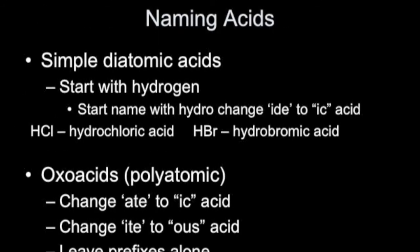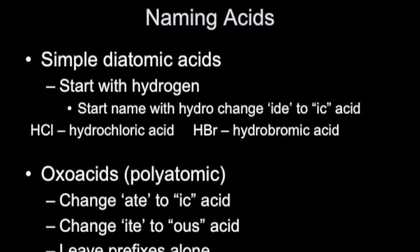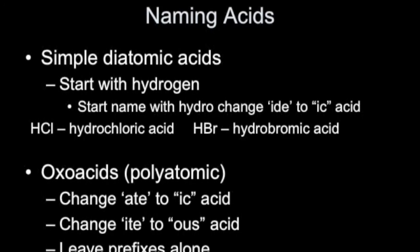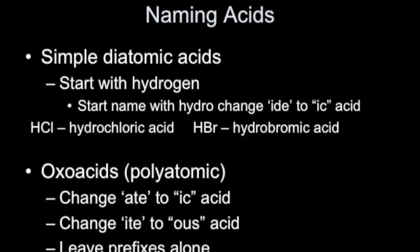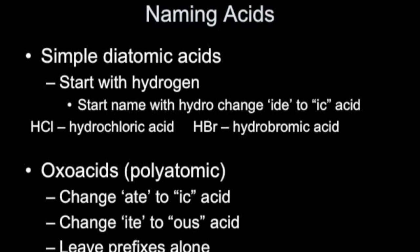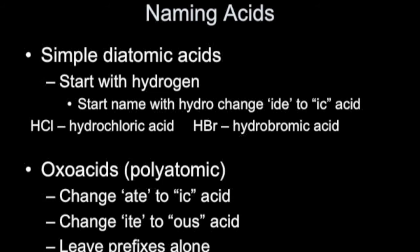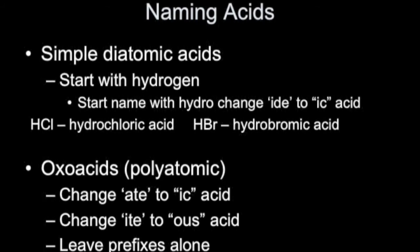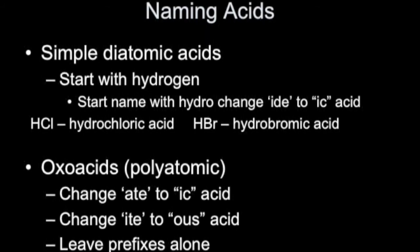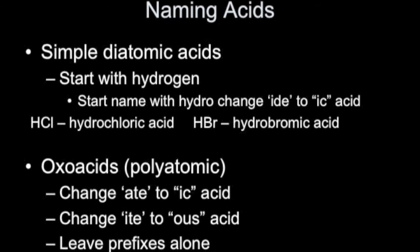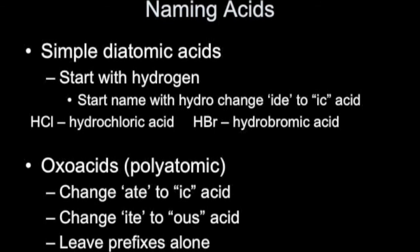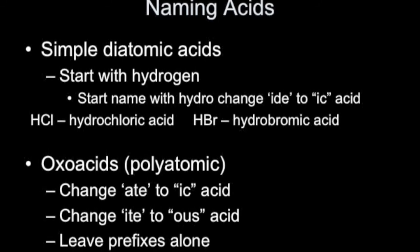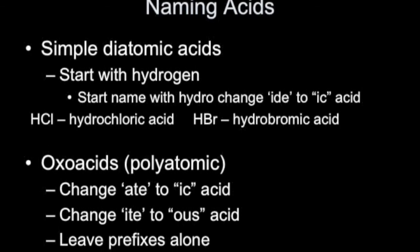For simple diatomic acids, which usually start with hydrogen, we change the beginning of the name to 'hydro,' change the end of the name from '-ide' to '-ic,' and add the word 'acid.' So HCl becomes hydrochloric acid, and HBr becomes hydrobromic acid. Hydrogen starts at the beginning, so we add 'hydro' and change the ending to '-ic acid.'